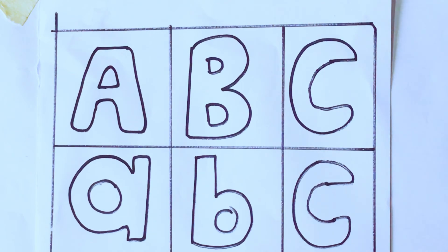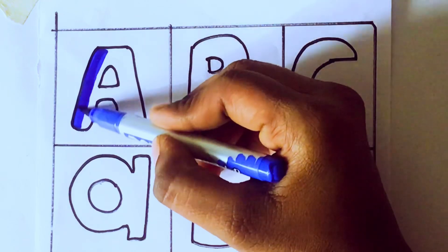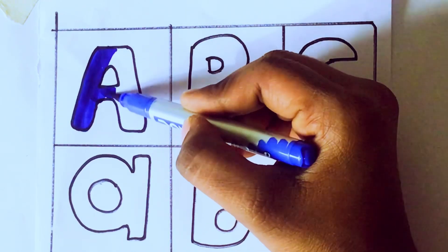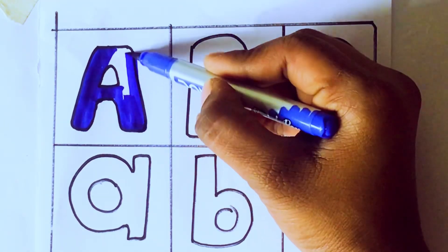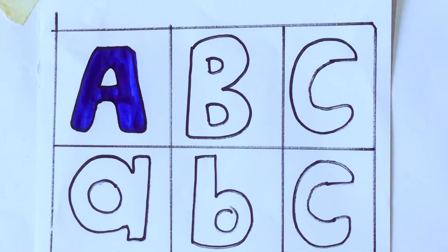Let's draw the alphabets. Blue color, A, A. Which letter kids? Capital A. A for apple.